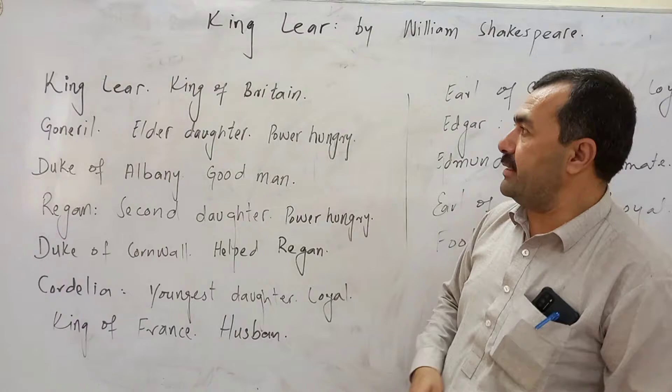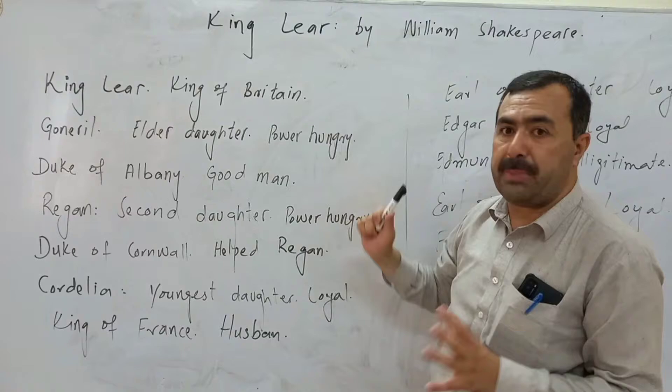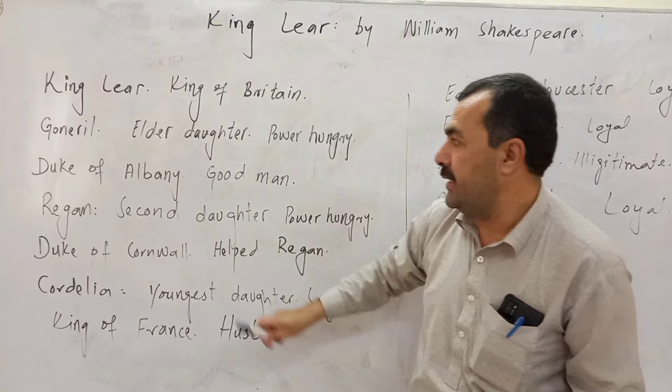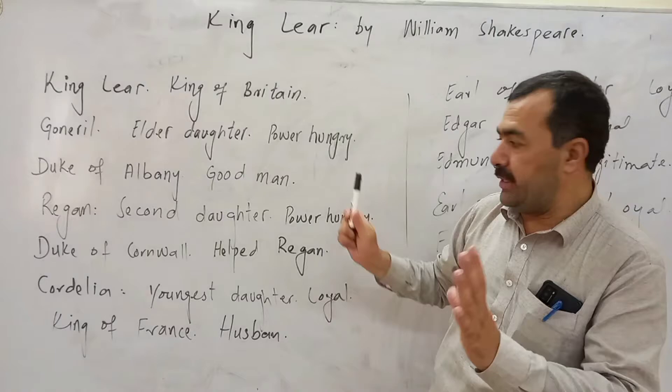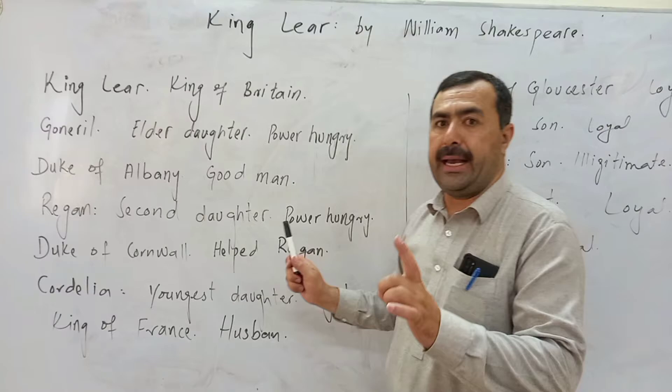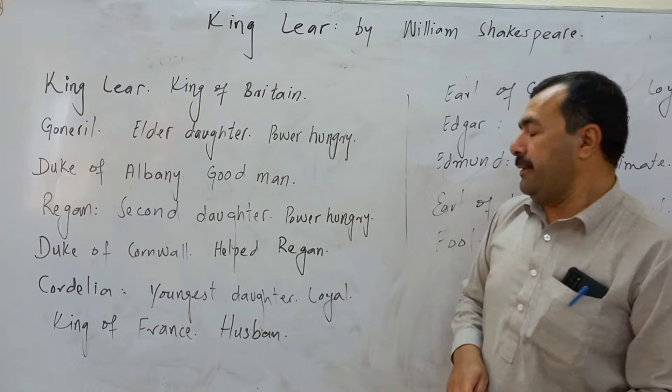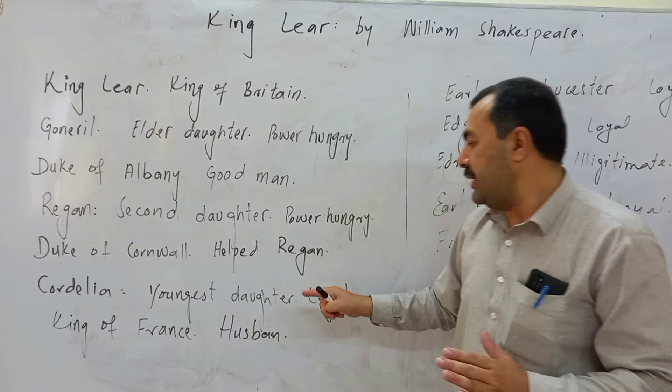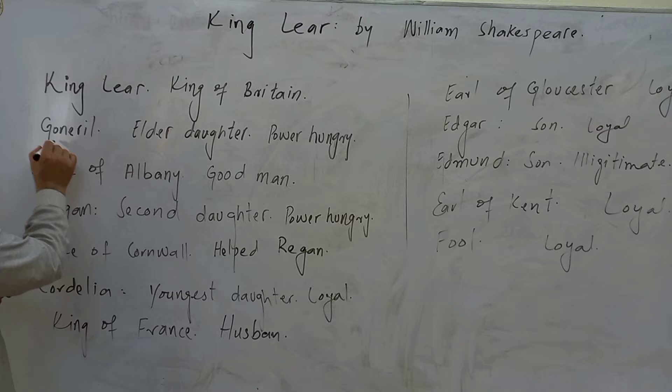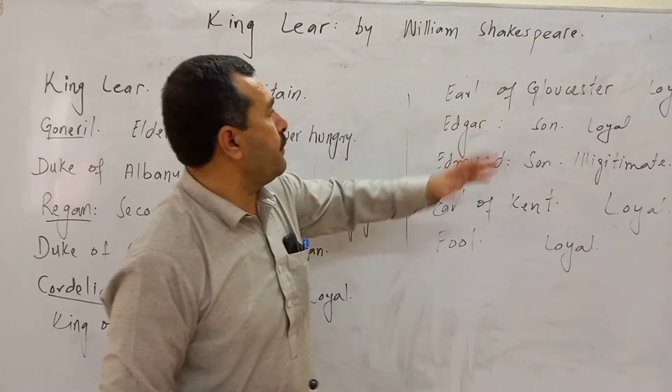There are several characters. King Lear, the king of Britain. Goneril, the elder daughter of King Lear — she is power hungry. Duke of Albany, he is a good man and the husband of Goneril. Regan, the second daughter, also power hungry — she helps Goneril. Duke of Cornwall, the husband of Regan, he also participated in their plot. Cordelia, she is the youngest daughter and she is loyal to the king. The King of France is the husband of Cordelia. So King Lear has three daughters: Goneril, Regan, and Cordelia.